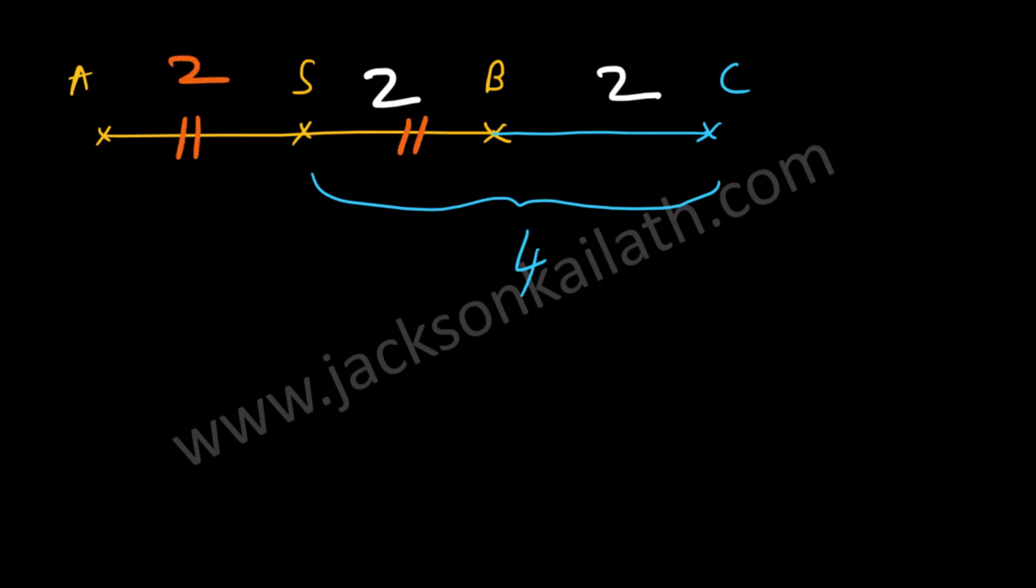So we can easily find the distance between Abdul's house and Carlos's house, which is two plus two plus two, which is equal to six. And that is answer option D.